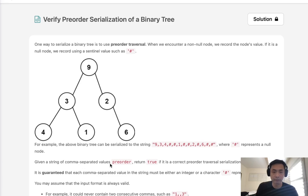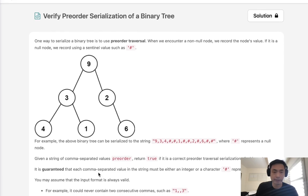Now given a string of comma separated values preorder, return true if it is indeed a correct preorder traversal serialization of a binary tree. It's guaranteed that each comma separated value is either going to be an integer or the character hash representing the null pointer.